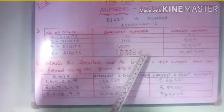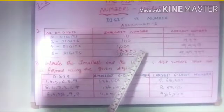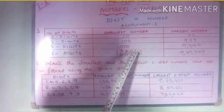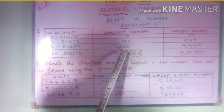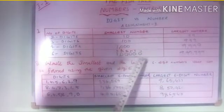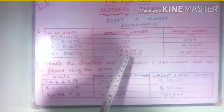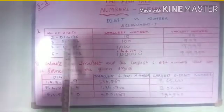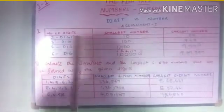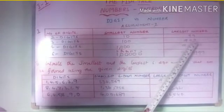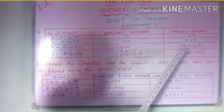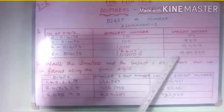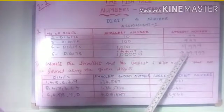Remember the place values we have studied: 1s place, 10s place, 100s place, 1000s place, and lakhs — so this is 1 lakh. The largest numbers formed with 2 digits is 99, the largest 3-digit number is 999, the largest 4-digit is 9999, and the largest 6-digit is 9,99,999.